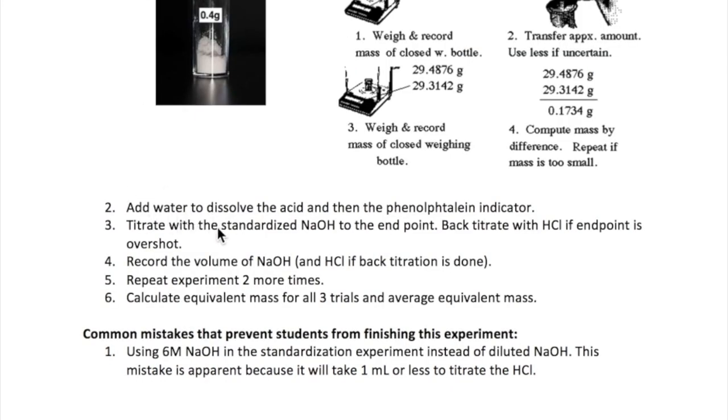Dissolve the acid by adding water, then add phenolphthalein for your titration indicator. Mix with a stirring rod to dissolve the acid. Some of the acid may not dissolve completely, this is fine, as it should dissolve when the base is added. Titrate your acid with your standardized NaOH until the endpoint of phenolphthalein. Record the volume that you use.